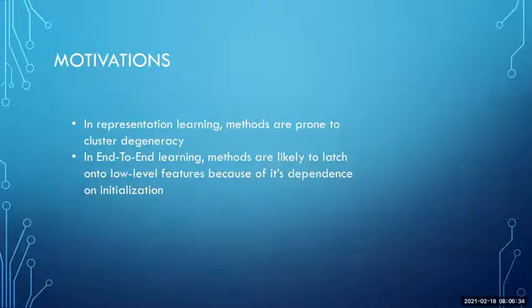In end-to-end learning, because it has a dependence on initialization, the challenge that they're trying to address is the likelihood of the model to latch onto low-level features, like a singular blue dot, and then bringing images with blue dots closer and closer in the latent space.